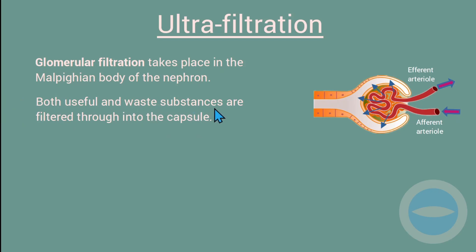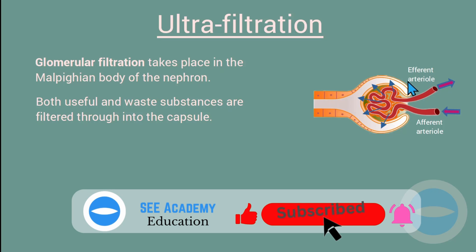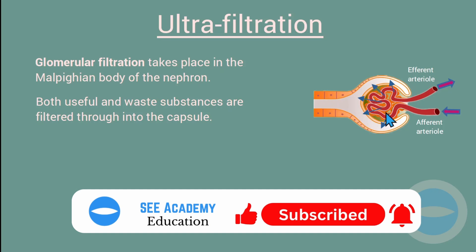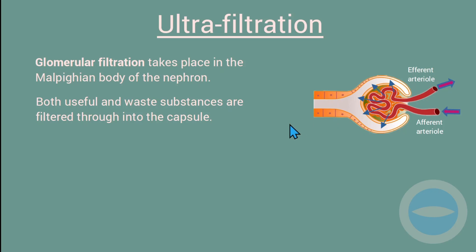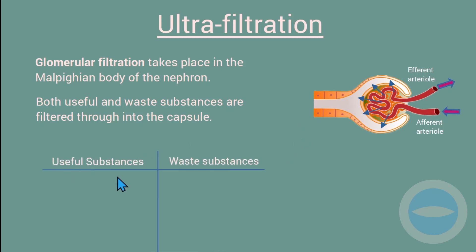Both useful and waste substances are filtered through into the capsule. Due to the difference in diameter between the afferent arteriole and the efferent arteriole, this creates pressure inside the glomerulus. Blood enters in a large volume and leaves in a small volume due to the smaller diameter of the efferent arteriole. This pressure forces small substances through the layers — and this is what we call ultrafiltration. It is not selective; it only allows small substances through.